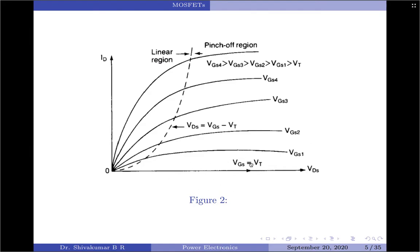The cut-off region is not indicated in the figure, but whenever the gate-to-source voltage is less than the threshold voltage, that portion of the graph is called the cut-off region. The saturation region of a MOSFET is also called the pinch-off region, and this is where VDS is greater than or equal to VGS minus VT. The linear region is where VDS is less than or equal to VGS minus the threshold voltage of the device.